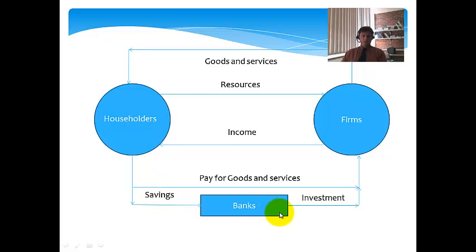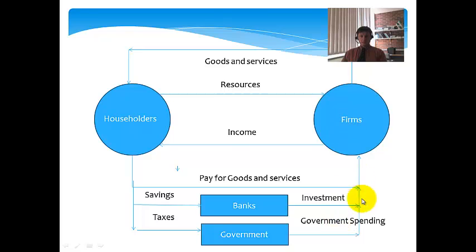Now, let's go one step further looking at the government sector. Now, you know there's two sure things in life. And one of those things is that you will be taxed by the government. So, taxes is a flow from the household sector to the government who then put it back into the income stream by government spending.